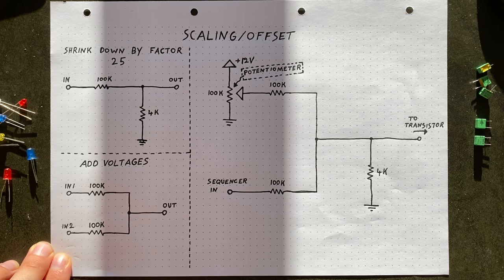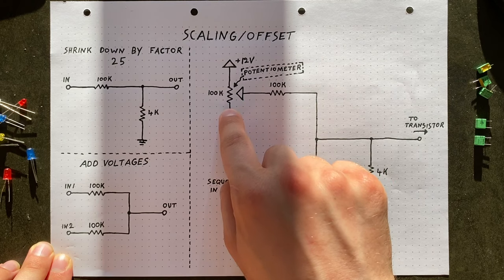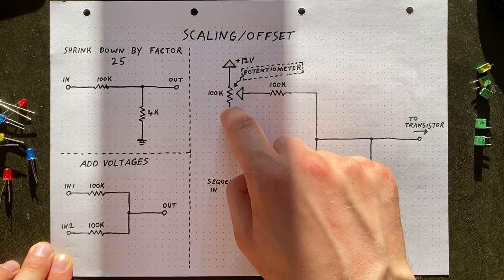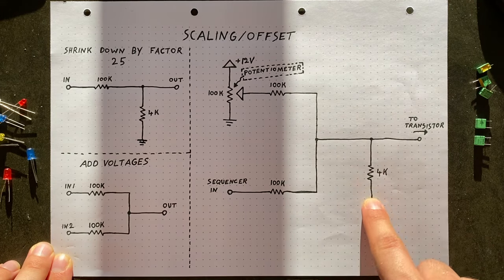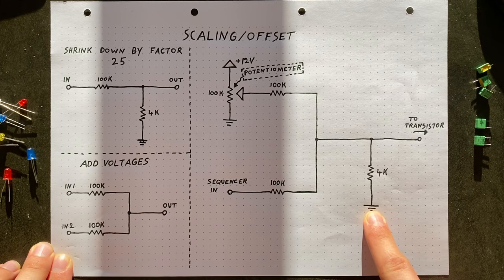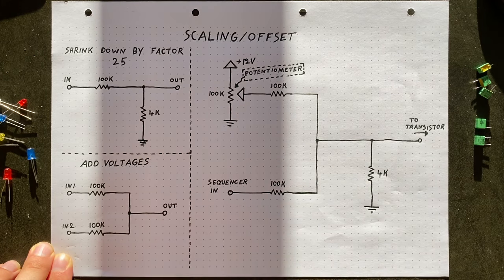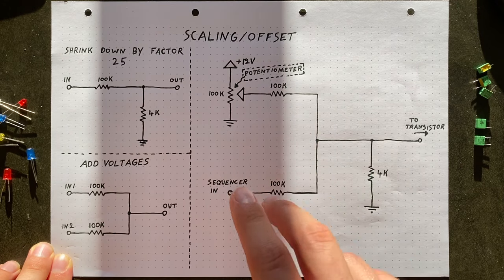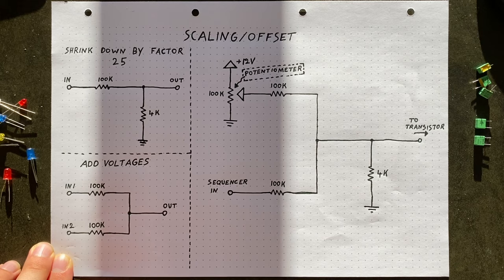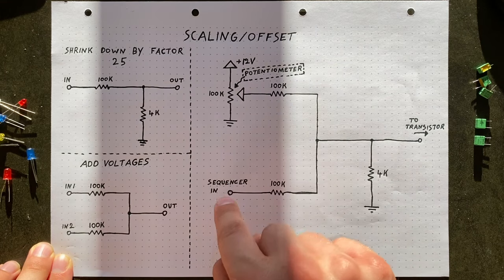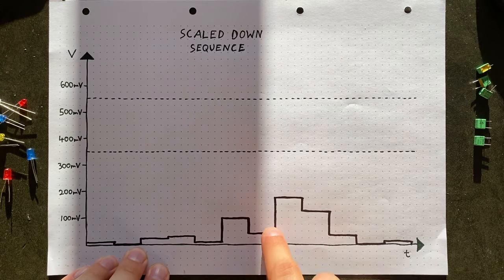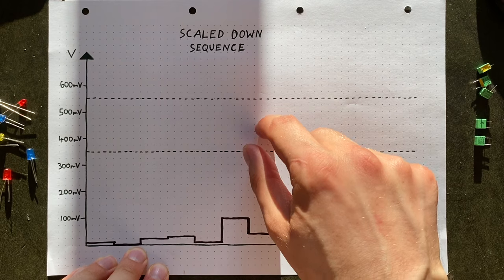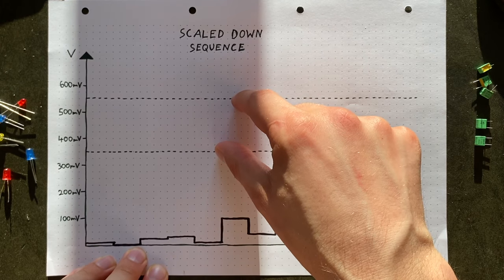From here on out, it's just about assembling ideas we already discussed. For the offset voltage, we will be reusing the variable voltage divider concept using the potentiometer. This way we are able to change our offset voltage on the fly. And then we will scale our mixed output down by adding the 4k ohm resistor to ground. This basically creates a voltage divider with two inputs, which works just like a regular one input one, just for two combined input voltages. So with our potentiometer, we should now be able to move our sequence up so that it fits within our transistor's usable voltage range.